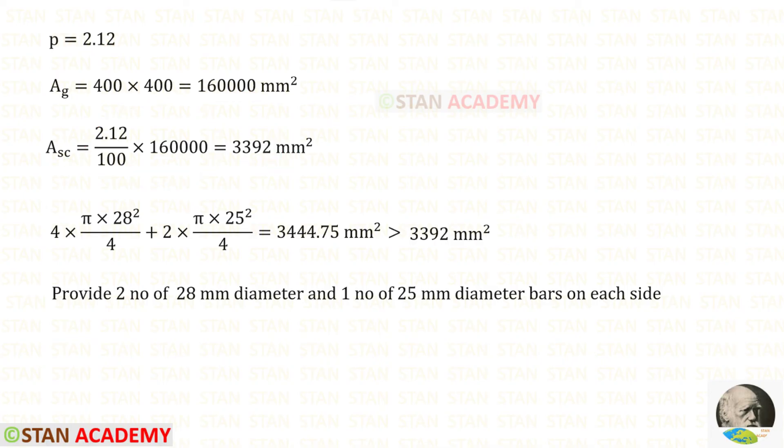Then we can use trial and error method and find the number of the bars and diameter of the bars. I am going to use four numbers of 28 millimeter diameter bars and two numbers of 25 millimeter diameter bars. I am getting an area approximately equal to this area.